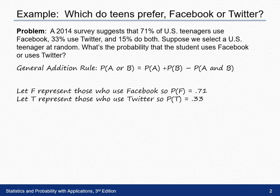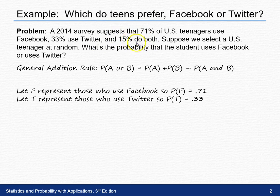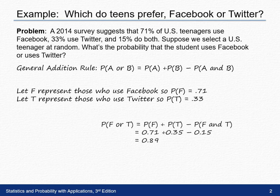Using the context of this question, F represents those who use Facebook, so the probability of F is 0.71. T represents those who use Twitter, so the probability of T is 0.33. And the 15% who do both is the probability of F and T. Plugging these into the general addition rule, we have the probability of using Facebook or Twitter equals the probability of Facebook plus the probability of Twitter minus the probability of using both.